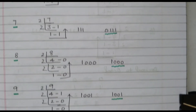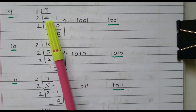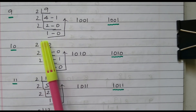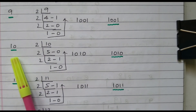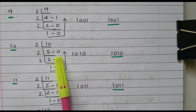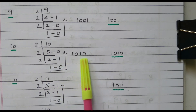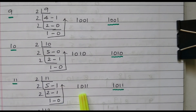For decimal 9, divide by 2: 4 times with remainder 1; again divide: 2 times with remainder 0; again divide: 1 time with remainder 0. Writing in reverse gives 1001. For decimal 10, divide by 2: 5 times with remainder 0; again divide: 2 times with remainder 1; again divide: 1 time with remainder 0. Writing in reverse gives 1010. For decimal 11, divide by 2: 5 times with remainder 1; again divide: 2 times with remainder 1; again divide: 1 time with remainder 0. Writing in reverse gives 1011.